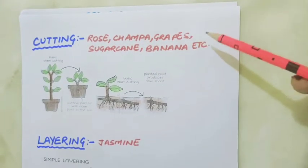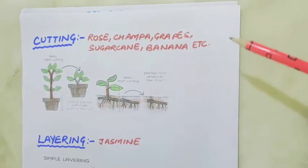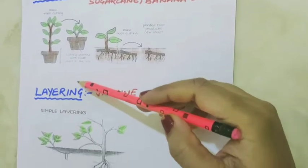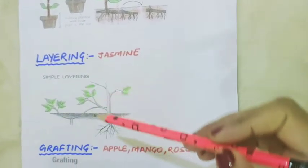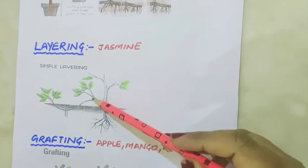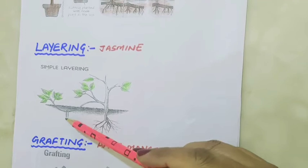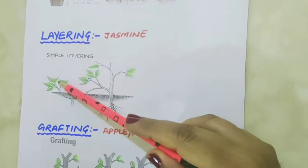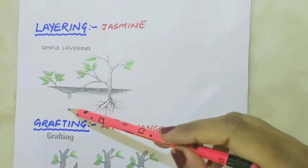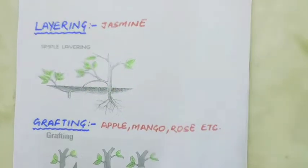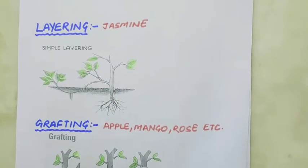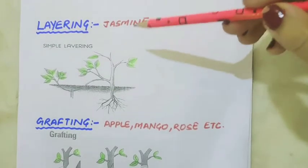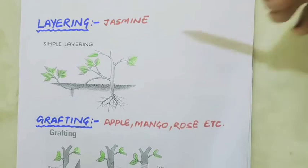Another method of vegetative propagation by stem is layering. In this method, a mature branch of the parent plant is bent down and covered with soil. The tip of the plant is kept above the ground, and roots develop from the branch, growing into a new plant. The layering method is usually done on plants that have long and slender branches, like jasmine.